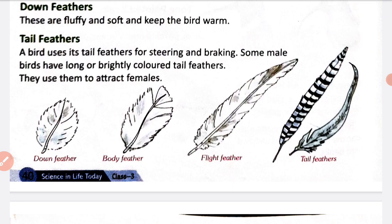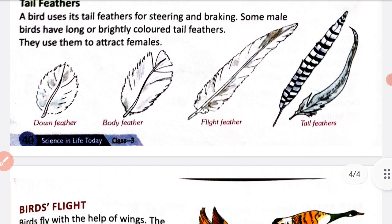The fourth type is tail feathers. A bird uses its tail feathers for steering and braking. Steering and braking means jab birds fly karte hain to yeh apni direction ko manage karne mein ya apni speed ko kam ya zyada karne mein tail feathers use karte hain. Some male birds have long or brightly colored tail feathers, and they use them to attract females.